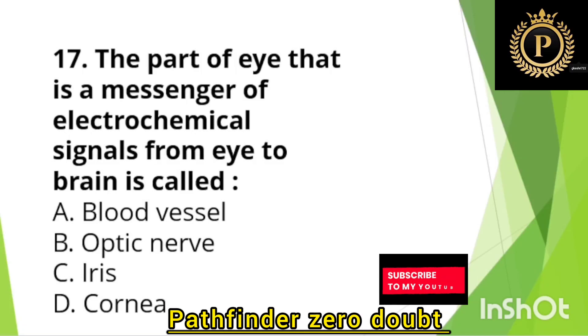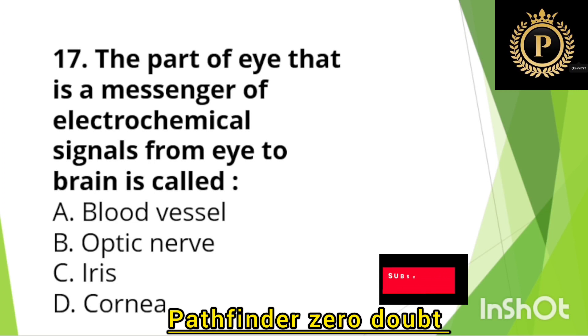The part of the eye that is a messenger of electrochemical signals from the eye to the brain is called — Option B: Optic nerves.